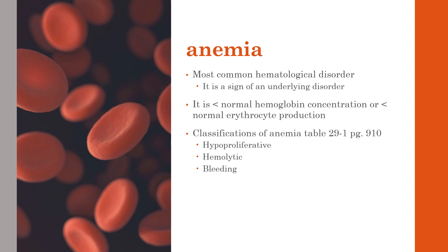Anemia is classified in several ways — most often by decreased number of erythrocytes with hypoproliferation, meaning decreased production of red blood cells; by hemolysis, which is destruction of red blood cells; and then loss of cells through bleeding. We'll go through disorders where each of these classifications are shown.